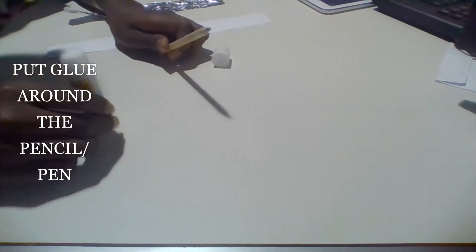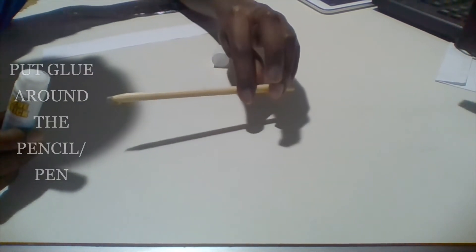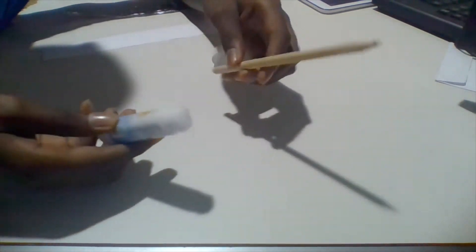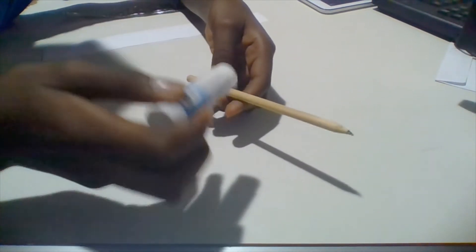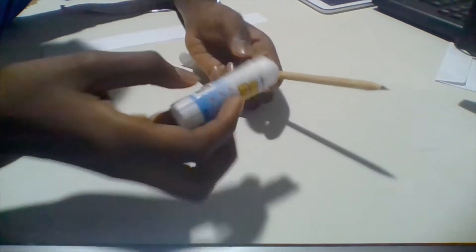The first thing that you want to do is take your pencil and take the glue and glue over it. That's exactly what I'm doing right now. The reason why we're doing this is to make sure that everything put on the light pen sticks to it.